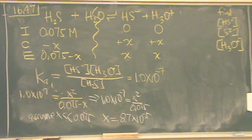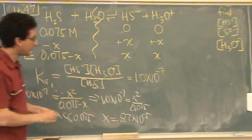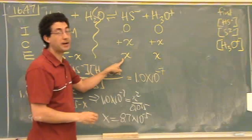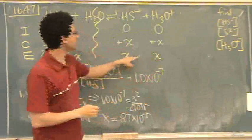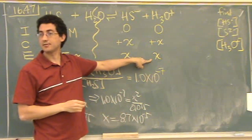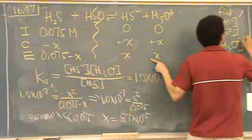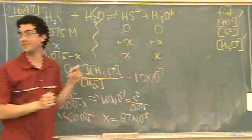So that's x. Now that I know x, I know HS minus. I also know H3O plus because that's equal to x. I found 2 out of the 3. I'm two thirds the way there.